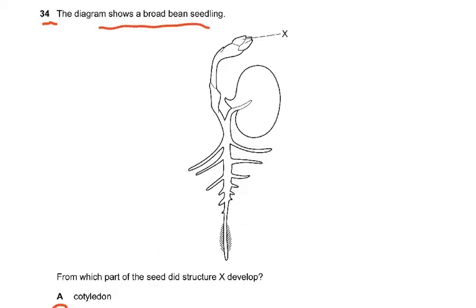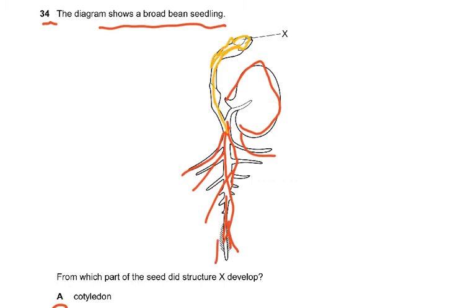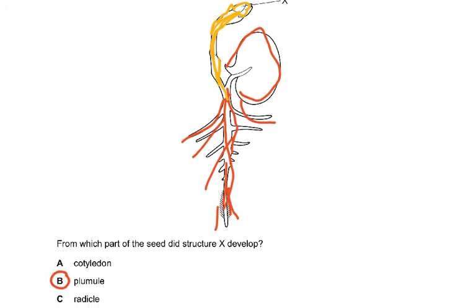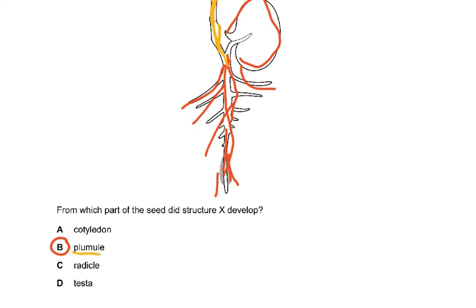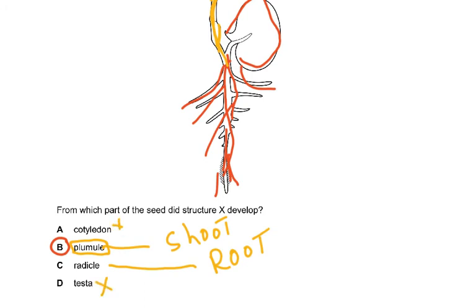Question 34: the diagram shows a broad bean seedling. You can see the seed part, the root developing downward, and the shoot developing upward. From which part of the seed did structure X develop? It developed from the plumule — the plumule becomes the shoot. The radicle becomes the root, and the testa is the outer covering. The cotyledons provide food stores that are used up during germination.